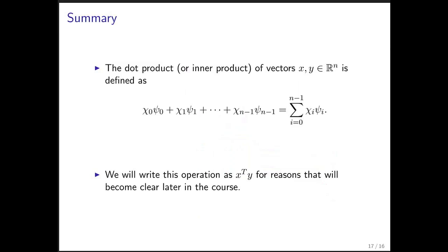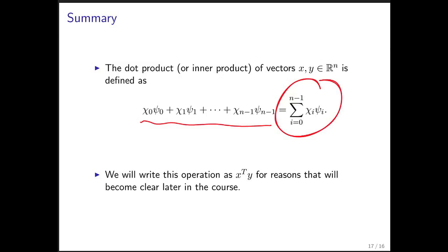So in summary, the dot product of two vectors is defined by multiplying the corresponding components together and adding the results. We can write that in shorthand with a summation sign, and in this course, almost always, we will denote the dot product by x transpose y.